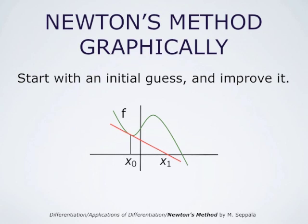Then we repeat this. From the point x1, we go up to the graph of f at the point (x1, f(x1)), and draw the tangent line at that point. This line intersects the x-axis at x2, our next approximation of the solution. Clearly, x2 is already a much better approximation than x1. This can be repeated as many times as necessary to approximate the solution.